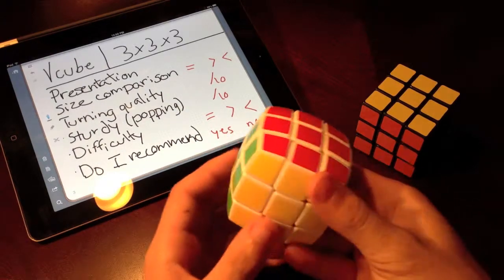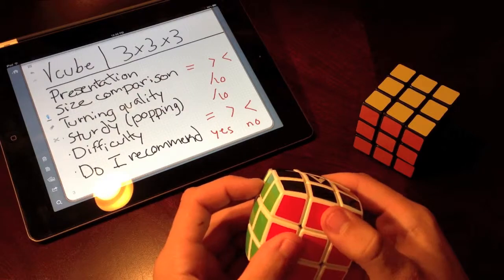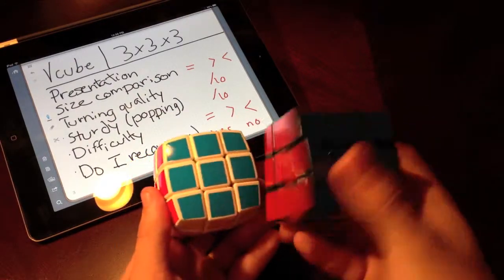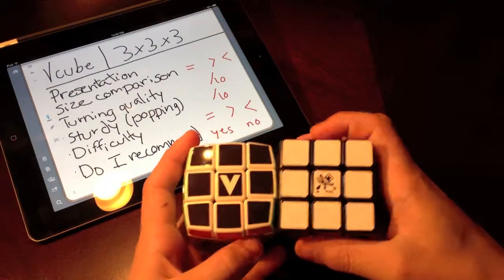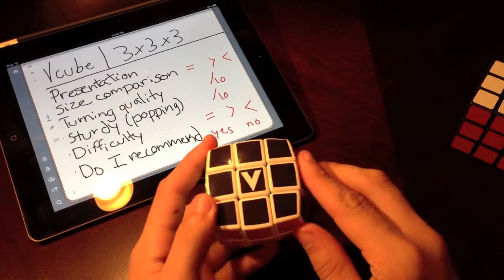So here it is, a 3x3x3 by vCube. It has the exact same color scheme as the 3x3 from Rubik's, but instead of white at the top it's black with a V in the middle for vCube.